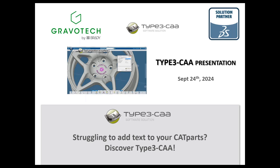Before starting, a few words about our company. Gravotech is the leader in permanent marking solutions. The headquarters are based in France, but we are present in more than 80 countries directly through our 18 subsidiaries or indirectly through our partner channel. Gravotech is not only a machine manufacturer — it's also a software editor specialized in 3D CAD/CAM software solutions.